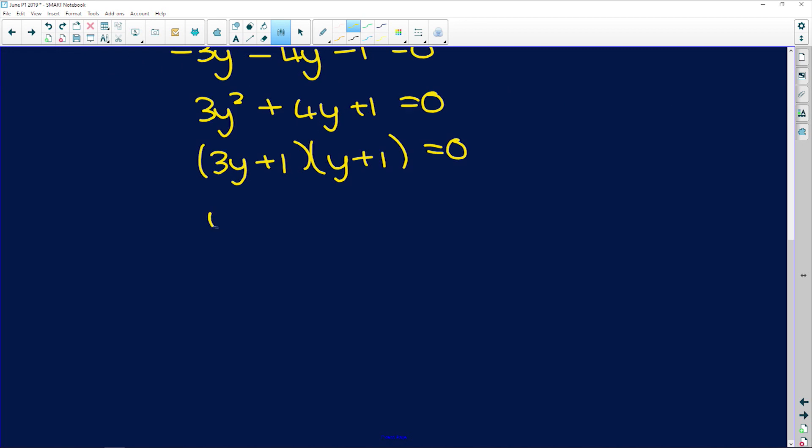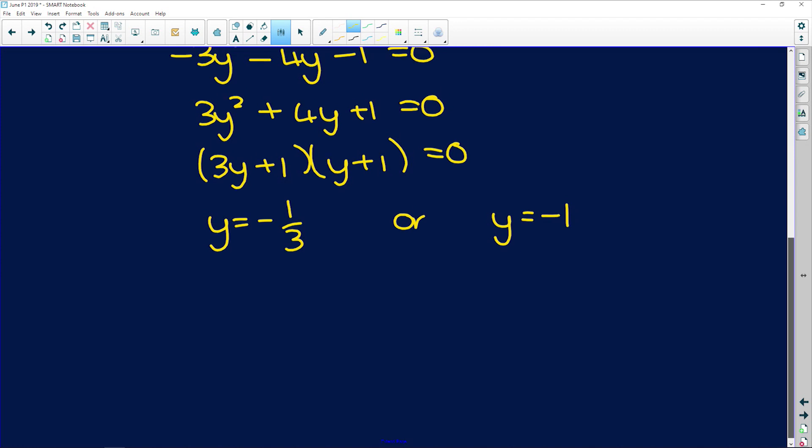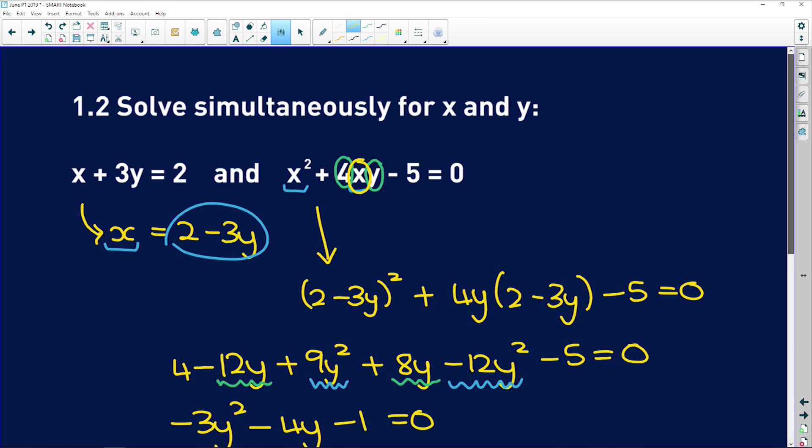So now we know that y is equal to negative 1 over 3, or y is equal to negative 1. Now guys, if you think you're finished, you're not. Solve simultaneously for x and y.